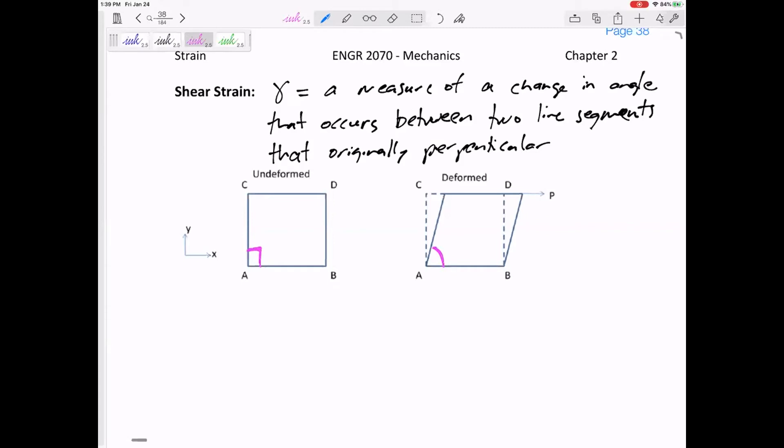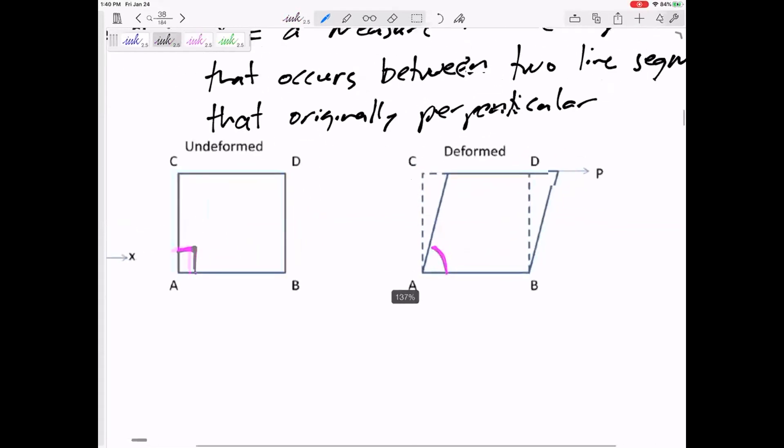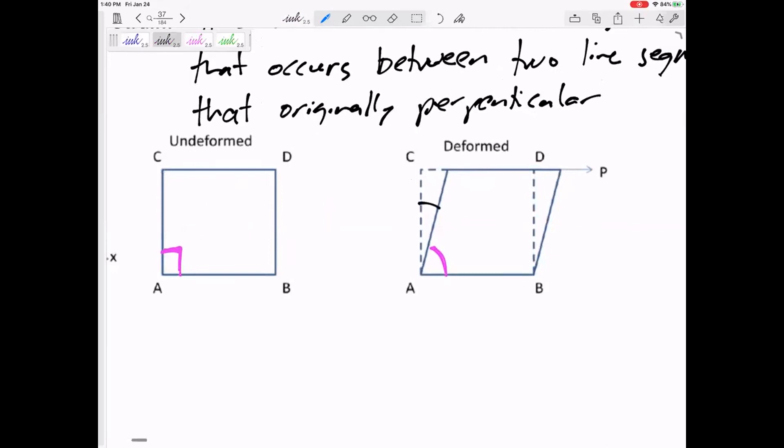So if we're looking for a change in angle, would you agree that that right there is my gamma? Gamma is the change in angle from 90 degrees of two lines that were originally at 90 degrees.